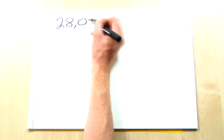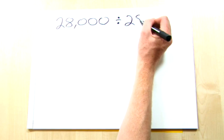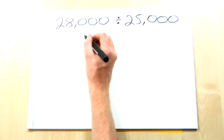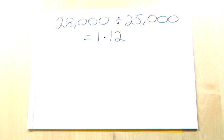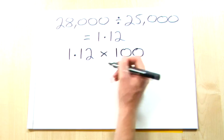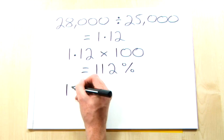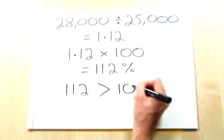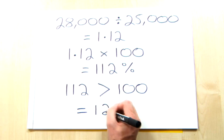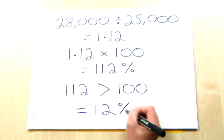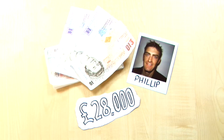First of all, take the after amount, in this case that's £28,000, and divide it by the original amount, which was £25,000. That gives you a figure of 1.12. Multiply this by 100 to turn this decimal into a percentage value of 112%. Now compare this number to the value of 100 to see if it's larger or smaller. In this case, 112 is 12 units greater than 100, meaning Philip got an increase on his previous salary of 12%. An inflation-busting boost for someone.